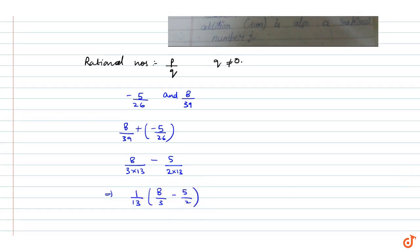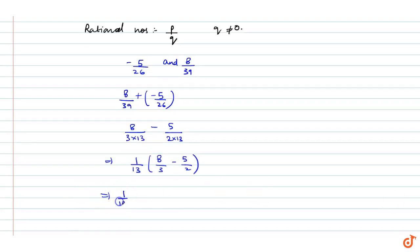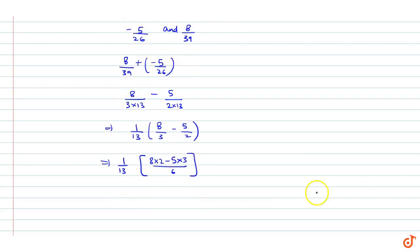Now we take the LCM. The LCM of 3 and 2 is 6. So we get 1 by 13 into 8 into 2 minus 5 into 3 upon 6, which gives us 1 by 13 into 16 minus 15 upon 6.